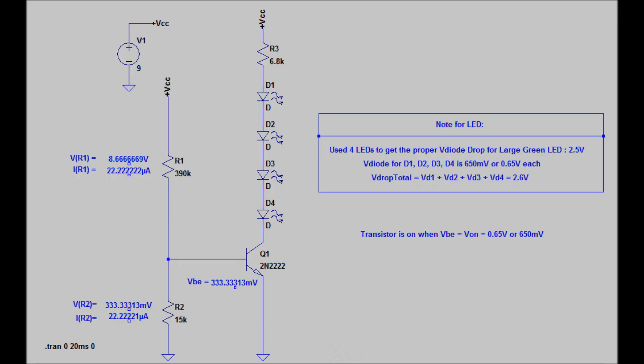The LED used in the design of this circuit is a large green LED. Its forward bias voltage is 2.5 volts. In LTSpice I connected 4 series LEDs which contribute 0.65 volts each, giving a total of 2.6 volts — pretty close to the 2.5 volts.